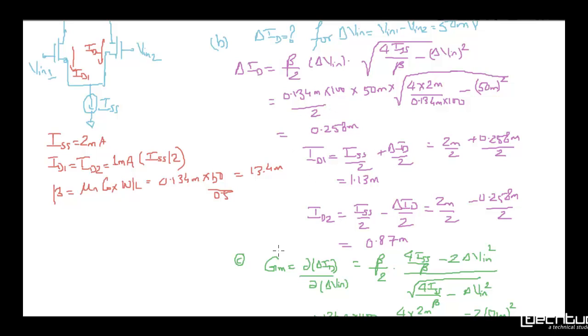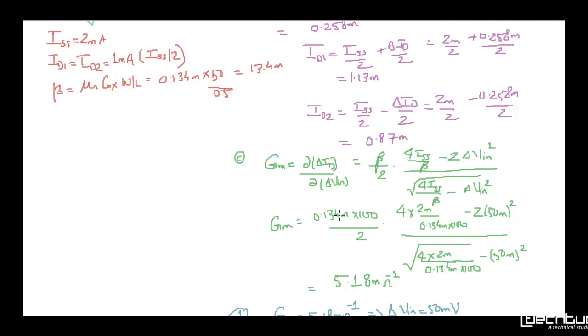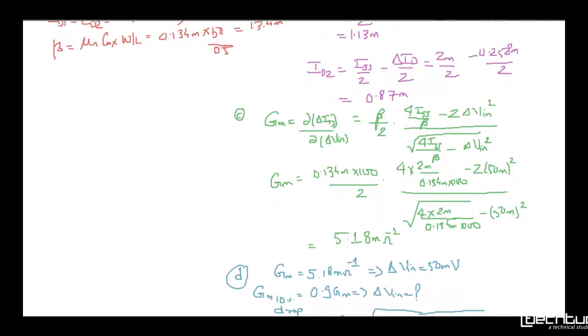The third sub-part is transconductance. Again, we derived this in session 5. The formula is beta by 2, 4 ISS by beta minus 2 delta VIN square, over root of 4 ISS by beta minus delta VIN square. We know delta VIN, ISS, and beta, so we substitute the values and get 5.18 milli-ohm inverse. This is the transconductance.